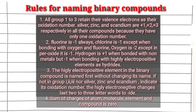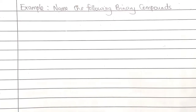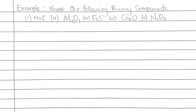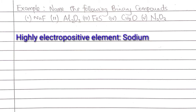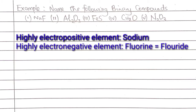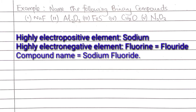Now we are going to take examples to learn how to name binary compounds. Starting with NaF: Na, that is sodium, is highly electropositive, so it remains as sodium. It is found in group 1, so its name has no oxidation state indicated — we are not going to call it sodium one. Fluorine is highly electronegative, so it changes from fluorine to fluoride. Therefore, the name is sodium fluoride.